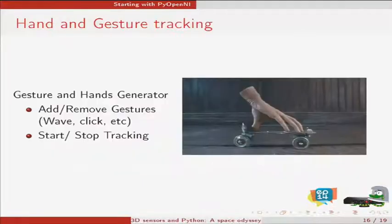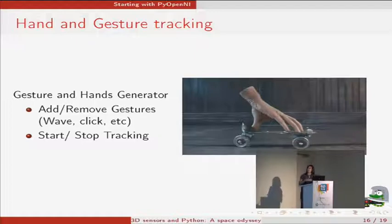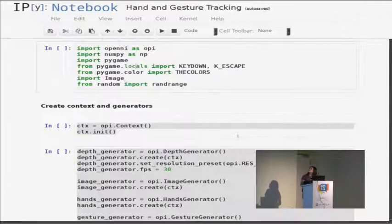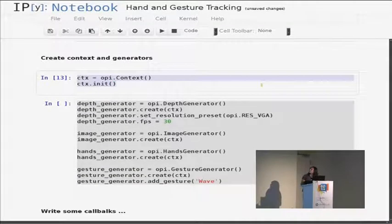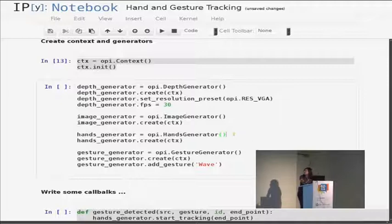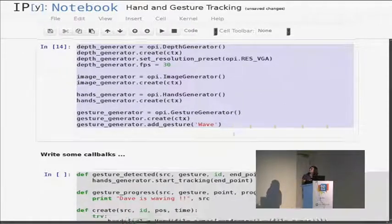The last demo that we are going to see is about gesture and hand generators. In gesture you have like preloaded five or six gestures like waving, swiping, clicking and a bunch of other more. And you can start and stop the tracking whenever you want. We import similar libraries, create a context, create depth generator image and hands. You can see that the gesture generator you have to add the gesture you want to track. If it's not the basics, you can program your own gesture.